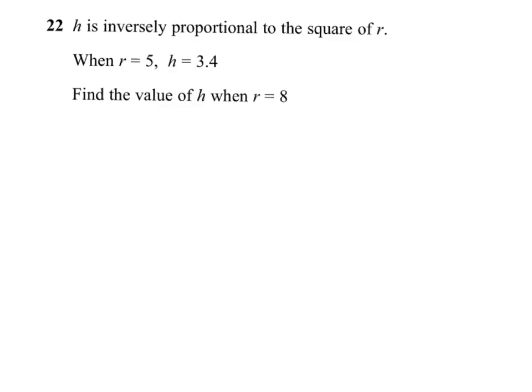So, taking the first statement, h is inversely proportional to the square of r, it means we've got to write h equals k over, because it's inverse, so the r goes on the bottom, and it's the square of r. So, h equals k over r squared.